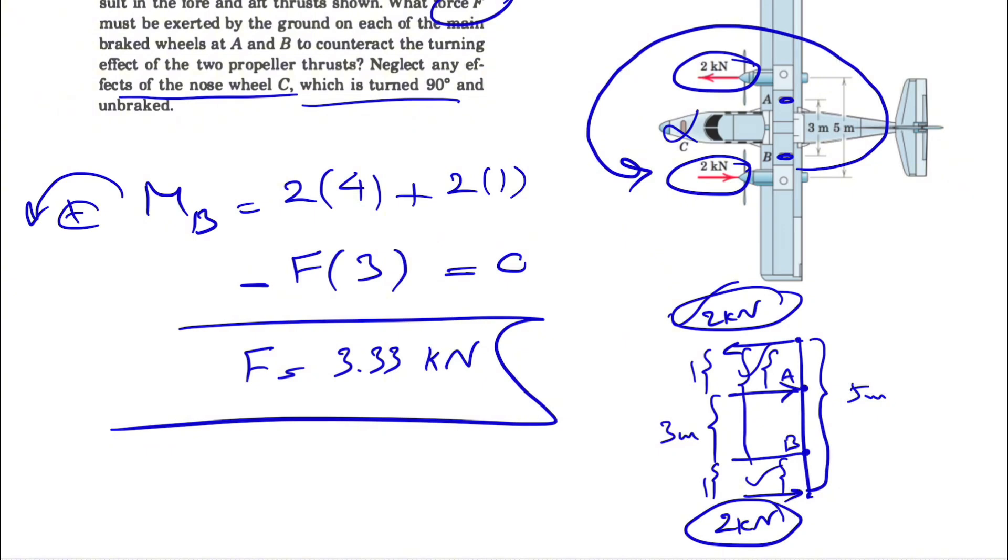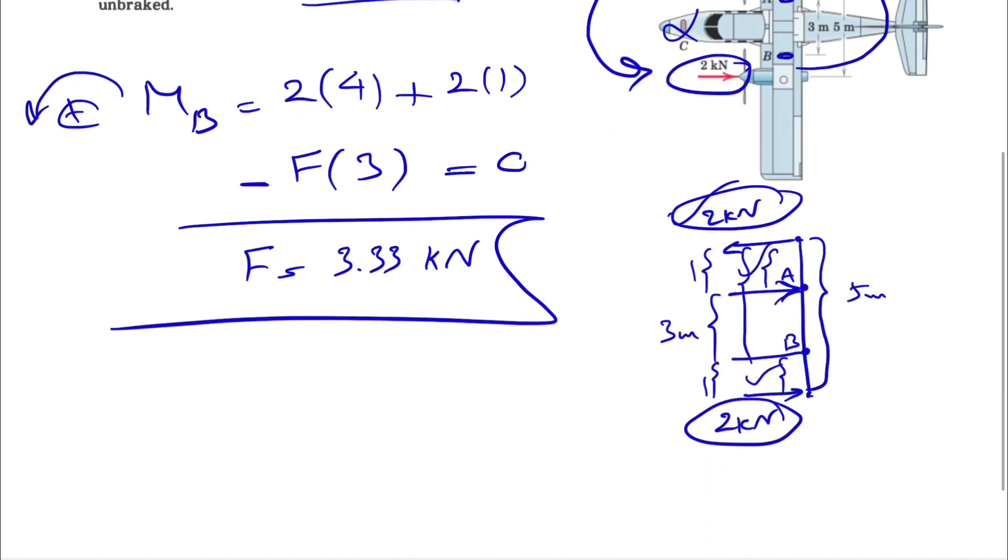That one is to the right. We can try to do the same thing and find the moment about point A. Whatever we did in the previous step, everything will be the same, and if we do that, we'll see that we have to have the force at B to the left.